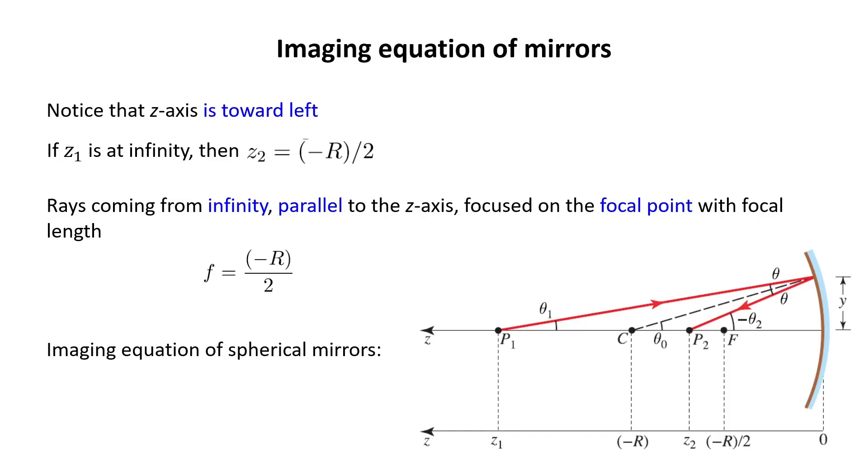Then, if I substitute F into the previous equation, I can conclude that 1 over z1 plus 1 over z2 is 1 over F, where F is the focal length of the mirror.